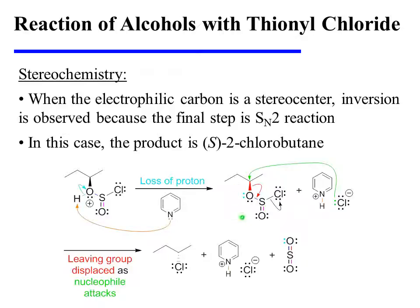At this stage, the good leaving group will be displaced by the attack of chloride. Notice that this displacement is actually an SN2 reaction. Therefore, when the electrophilic carbon of the substrate is a stereocenter, inversion of configuration will be observed. In this case, the product is S-2-chlorobutane.